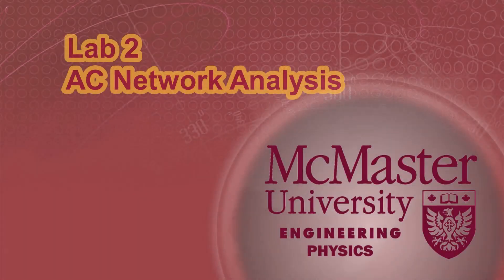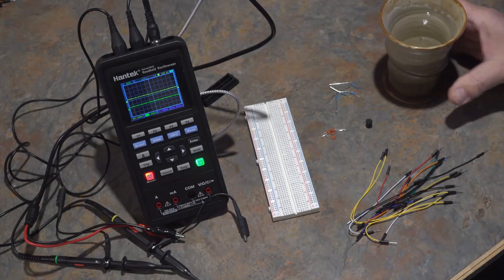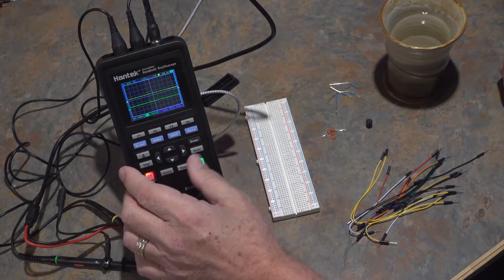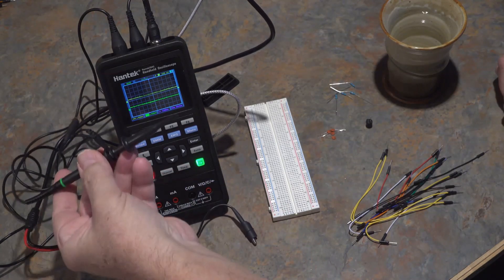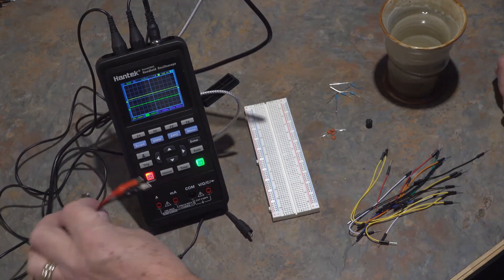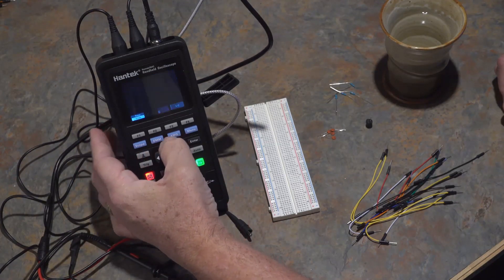Welcome to Lab 2, AC Network Analysis. This is the equipment we're using: the Hantek oscilloscope with two probes and two channels, plus the function generator as our AC source under the AWG.